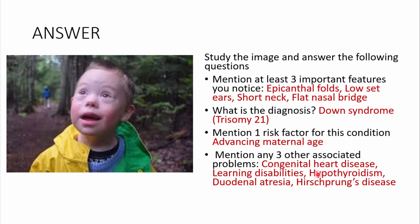For other associated problems, these children usually have congenital heart disease. They may be born with hypothyroidism or learning disabilities. Sometimes they may have poor hearing or hearing loss, so they need constant hearing checkups. They may also have duodenal atresia or Hirschsprung's disease.